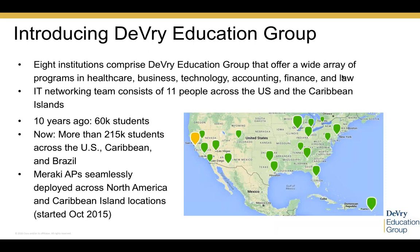Our networking team is located in the Chicago suburbs — Chicago, Illinois is our IT home office. In total, we have a large IT team: the networking team is distributed here in Chicago and in some of our other offices and campuses, and then we have other IT colleagues at our campus locations across the United States.